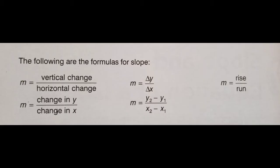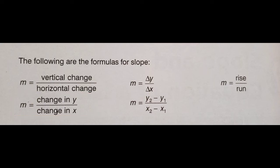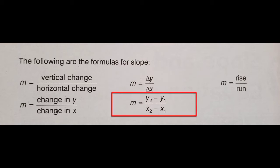These are the formulas for slope. M equals vertical change over horizontal change. It also can be read as change in Y over change in X. And this formula is used to find the slope if the given is 2 points. And if the given is the graph,